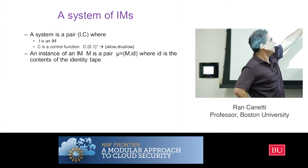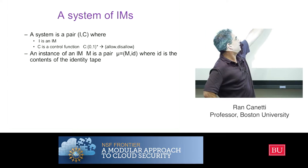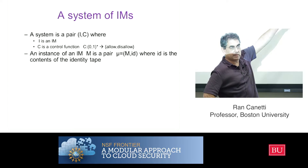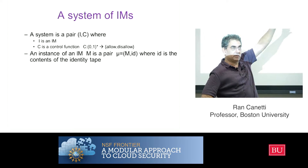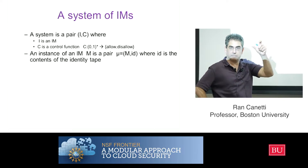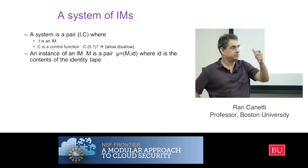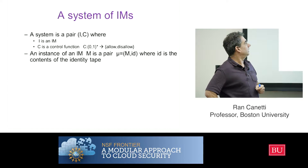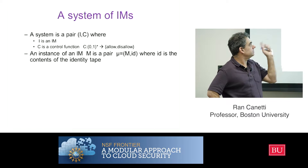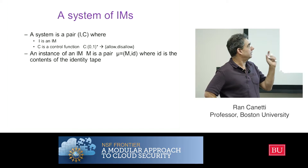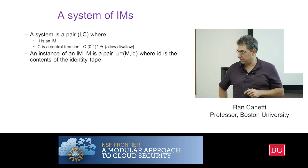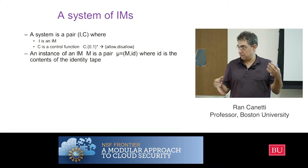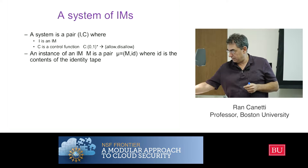So right now I'm calling it just a pair, which is the machine and the ID. And remember the ID is just the program and some string, which is the identity. This is what I'm calling an instance of the machine. And there are going to be many instances of each machine in the system, or it could be.